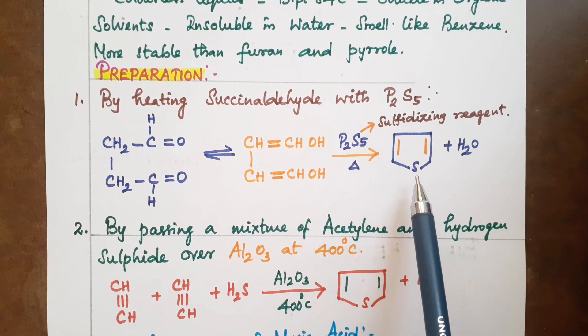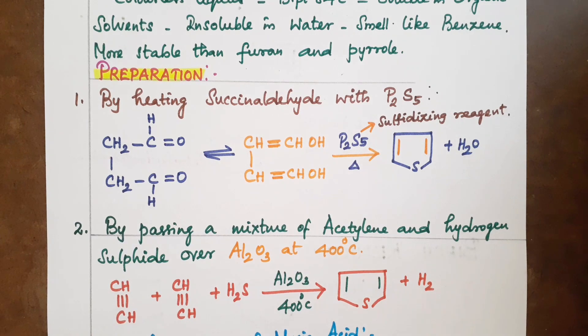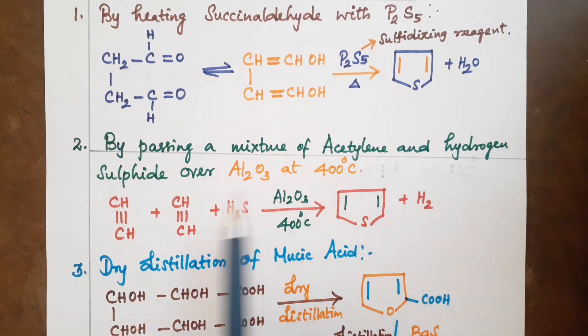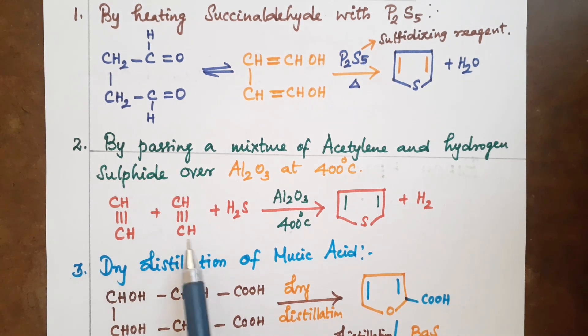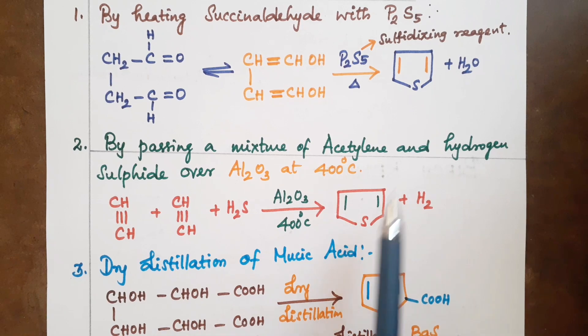Next method: by passing a mixture of acetylene and hydrogen sulfide over aluminum oxide at 400 degrees Celsius. Acetylene and hydrogen sulfide are passed over aluminum oxide to produce thiophene and hydrogen sulfide.